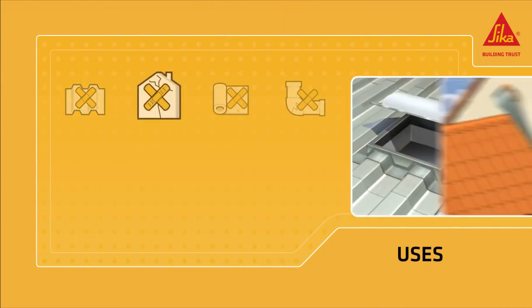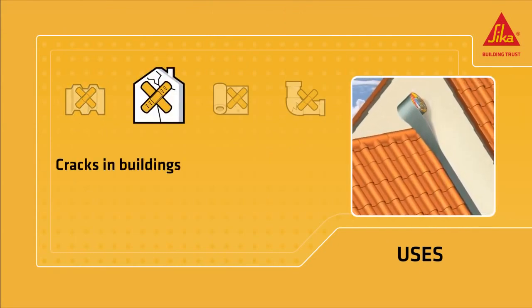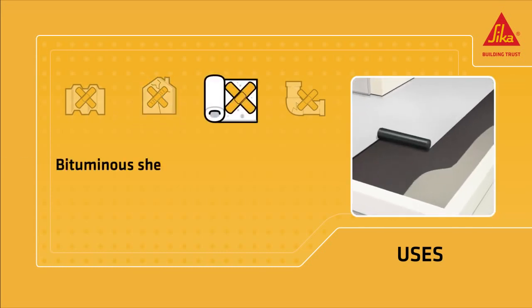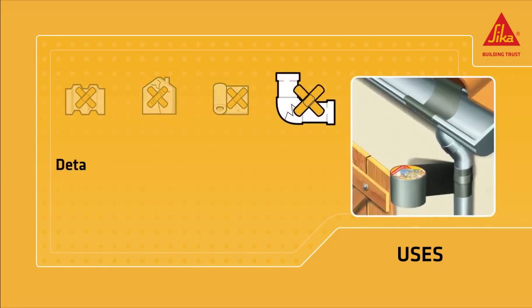Sika MultiSeal can be used for roof repairs including metallic roofing, cracks in buildings, bituminous sheets and other roofing details, gutters, etc.